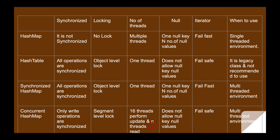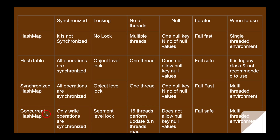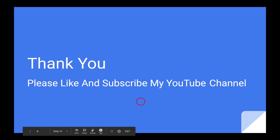ConcurrentHashMap does not allow null keys or null values. It returns a fail-safe iterator, meaning if you try to modify the map while iterating, it won't throw ConcurrentModificationException. It is recommended for use in multi-threaded environments. Compared to all three — HashMap, HashTable, and synchronized HashMap — ConcurrentHashMap is the fastest because there is no lock for read operations, only for write operations, and 16 write operations can be performed on 16 segments simultaneously.